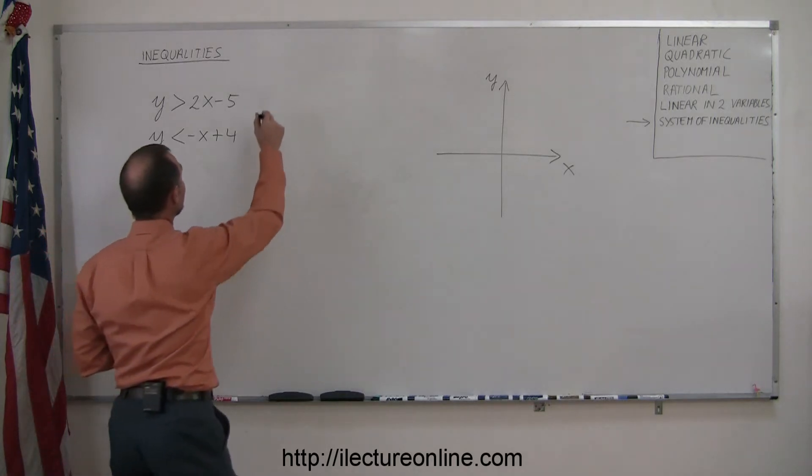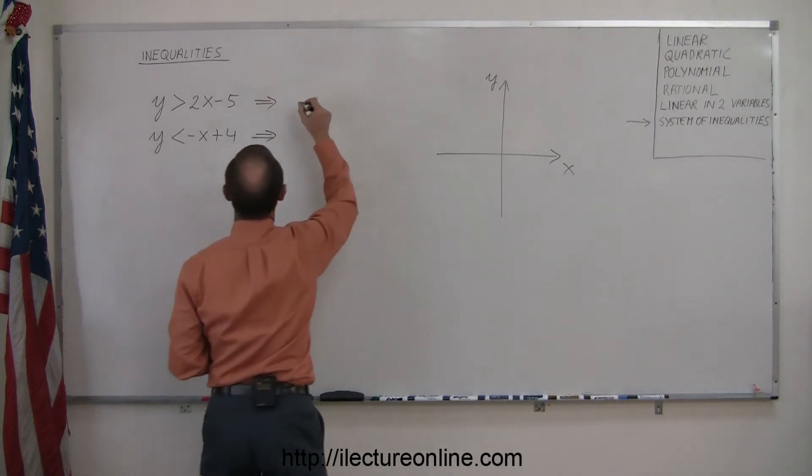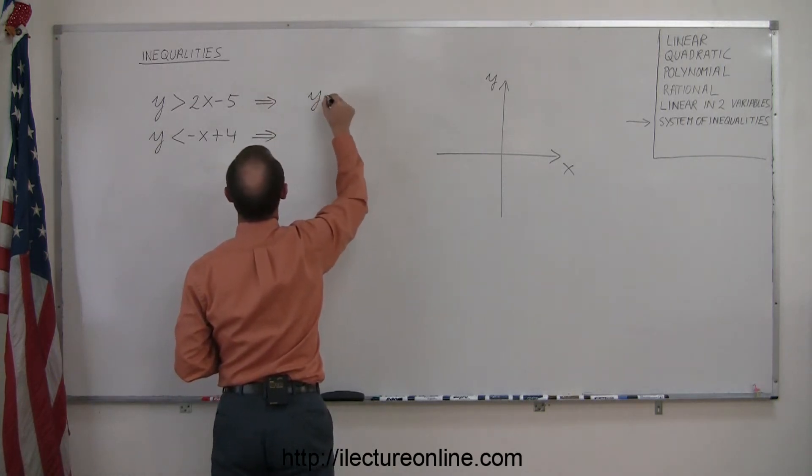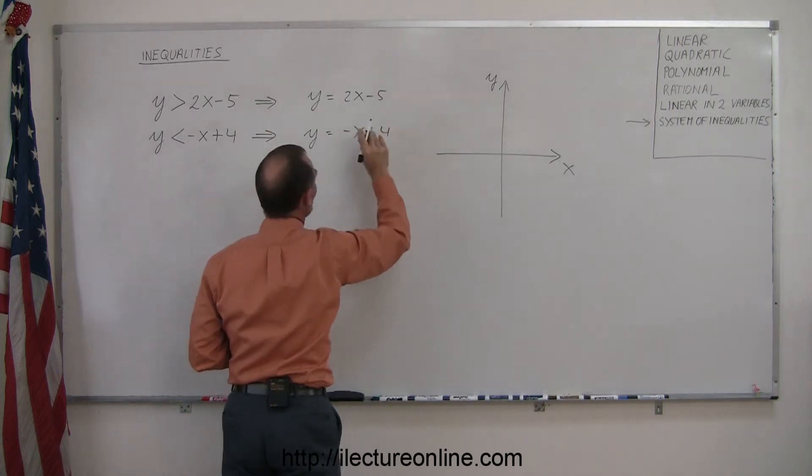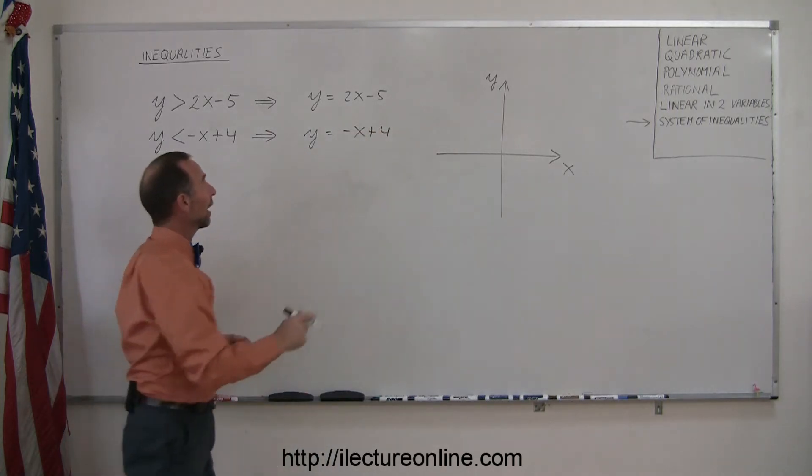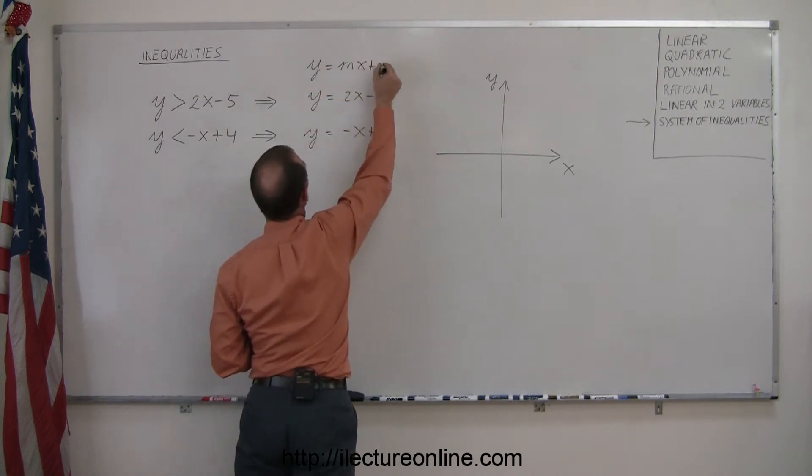We start out by taking each of these two inequalities and writing the equivalent equations. So in this case, we have y equals 2x minus 5. In this case, we have y equals minus x plus 4. Now notice that both of these equations have the form y equals mx plus b.